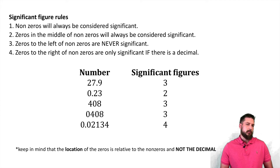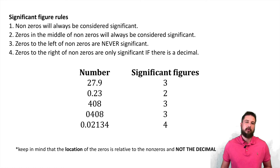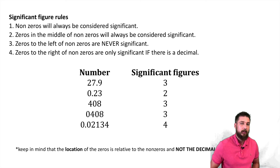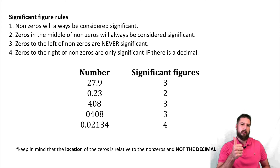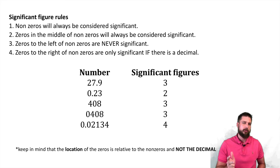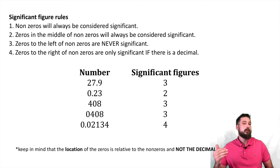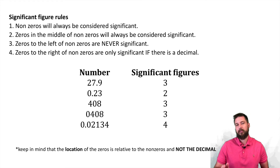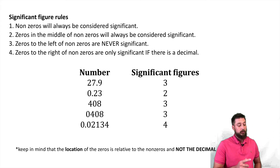What about 0408? The four and eight are significant. The zero between them is also significant. But the zero to the left of the numbers is not significant — zeros to the left are never significant. Now for 0.0408, both zeros are to the left of the non-zeros, so both are not significant. It's not about where they are relative to the decimal — it's about where they are in relation to the numbers.